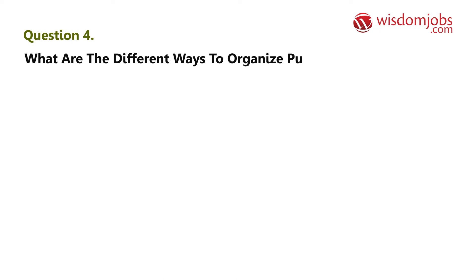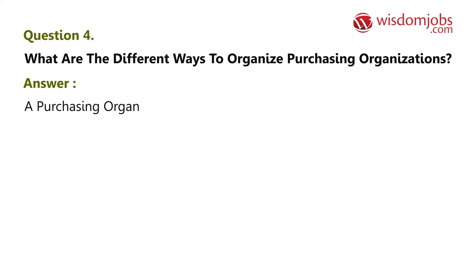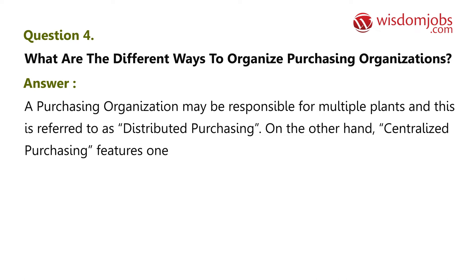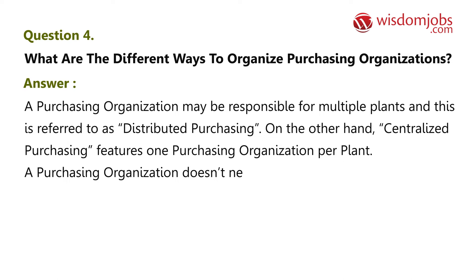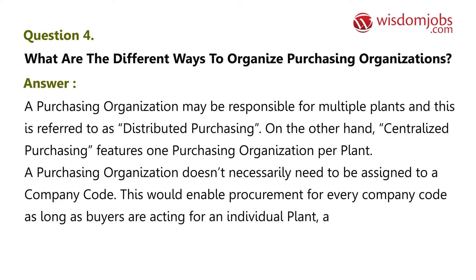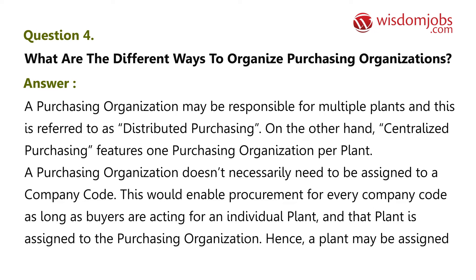Question 4: What are the different ways to organize purchasing organizations? Answer: A purchasing organization may be responsible for multiple plants, referred to as distributed purchasing. Centralized purchasing features one purchasing organization per plant. A purchasing organization doesn't necessarily need to be assigned to a company code, which would enable procurement for every company code, as long as buyers are acting for an individual plant assigned to the purchasing organization. Hence, a plant may be assigned to more than one purchasing organization.